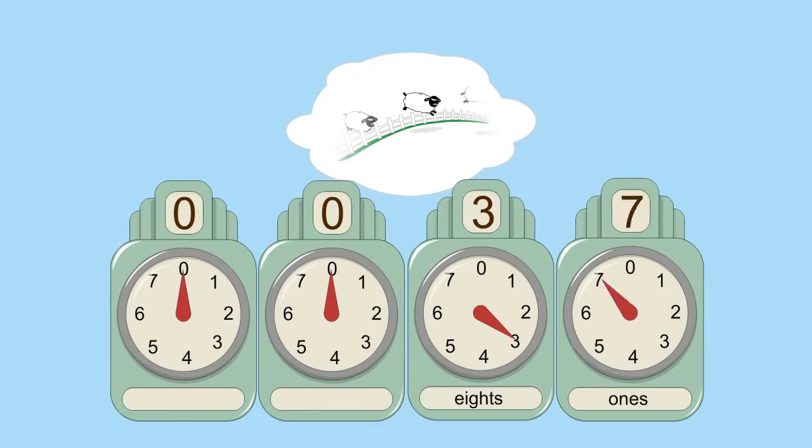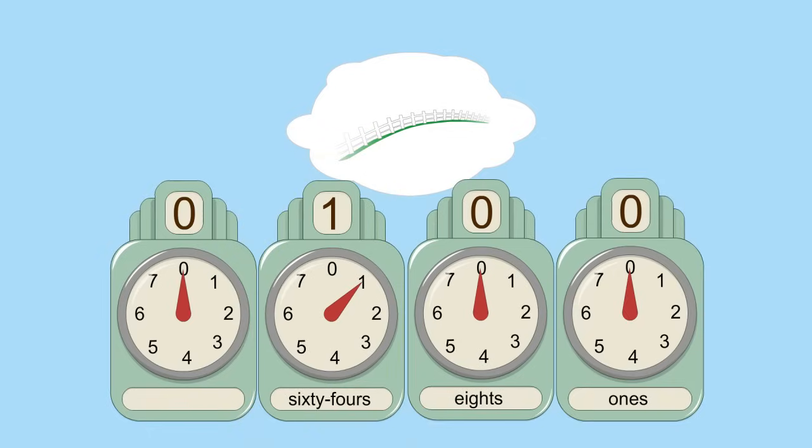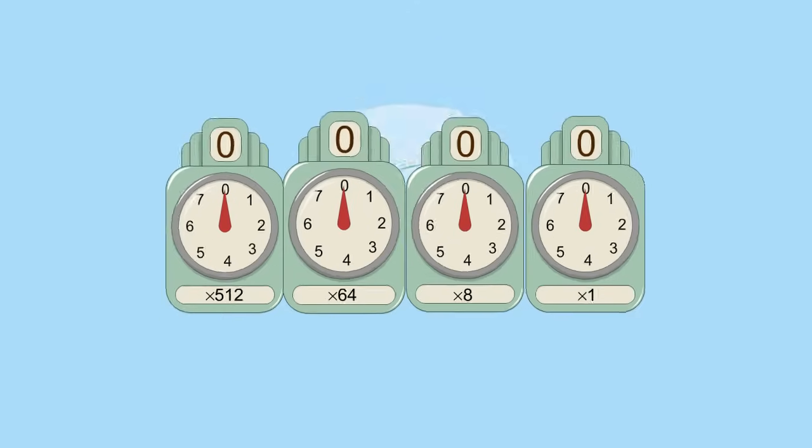We continue like this until we get to the highest number we can represent with two digits, octal seventy-seven. At that point, the ones and eights column start over at zero, and the third column increments. The one in the third column represents eight eights or sixty-four. Each column multiplier is eight times the previous one.